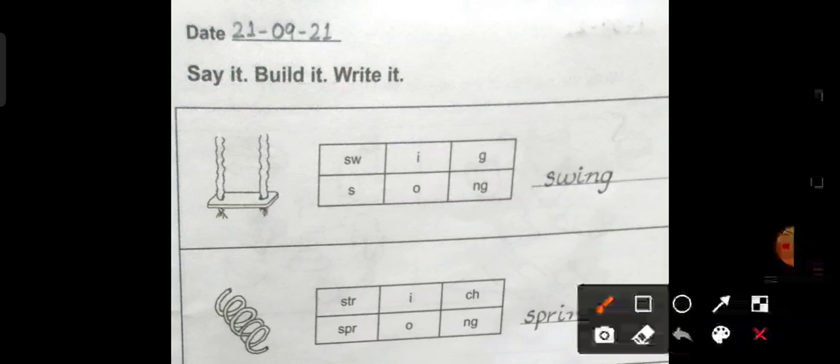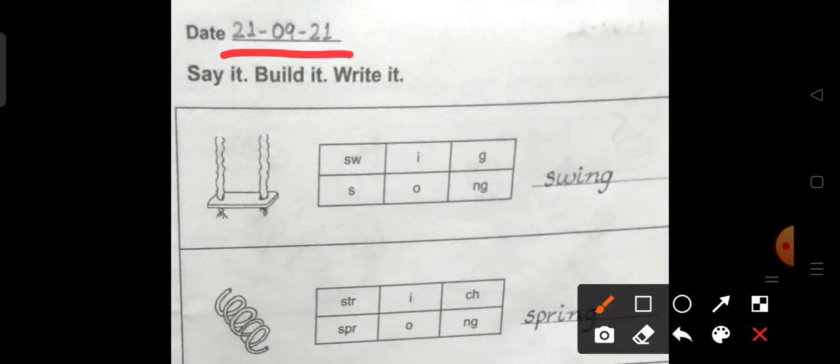So children, open page number 57 first. Write date. Date is 21st September 2021. Write 21.9.21.